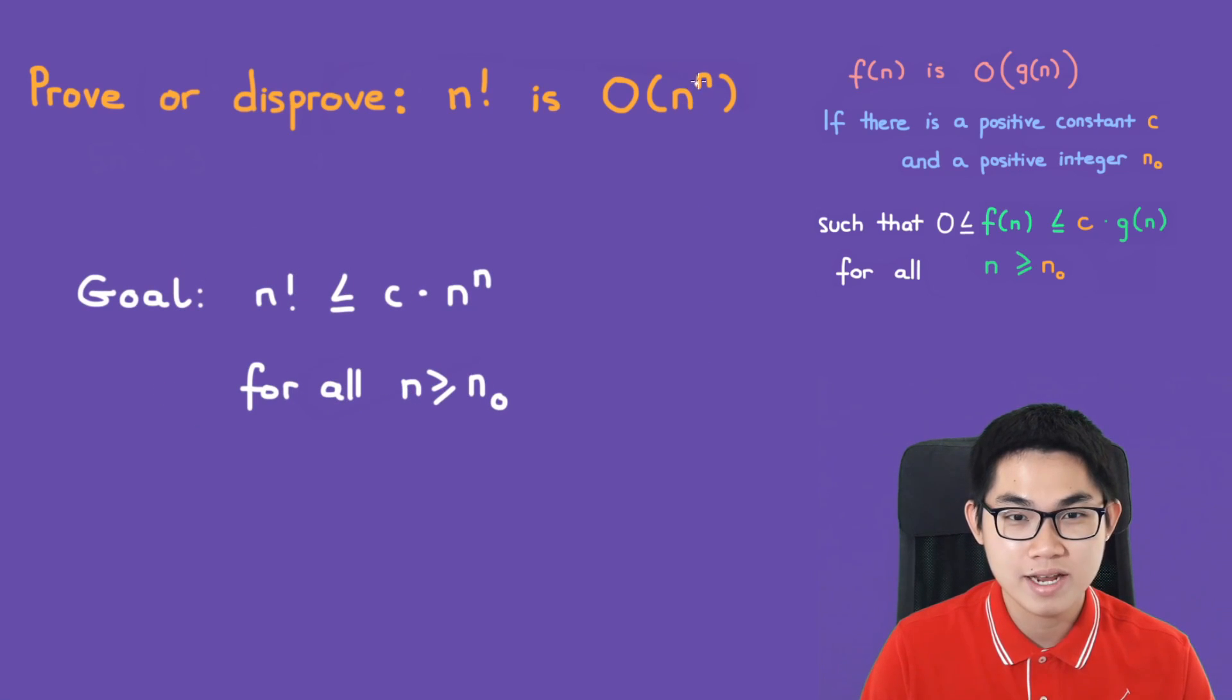Because we know that this one is larger than n factorial, we're going to prove the big O. All we have to do is show that there exists a positive constant c and a positive integer n naught such that this inequality is true.